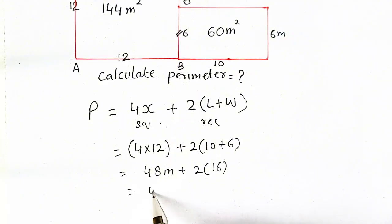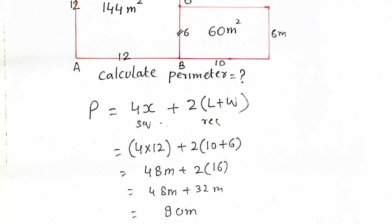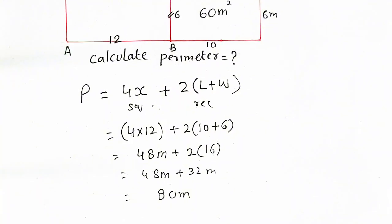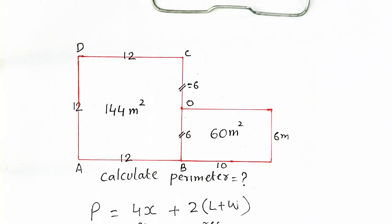So 48 meter plus 32 meter, it will be the total perimeter of the figure. So 8 plus 2 will be equal to 10, and 4 plus 3 is 7, and 1 was carry. So it will be 80. So 80 meter will be our required perimeter of this figure.